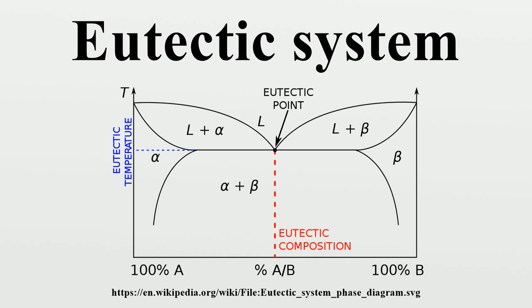Eutectic reaction: This type of reaction is an invariant reaction because it is in thermal equilibrium. Another way to define this is the Gibbs free energy equals zero. Tangibly, this means the liquid and two solid solutions all coexist at the same time and are in chemical equilibrium.